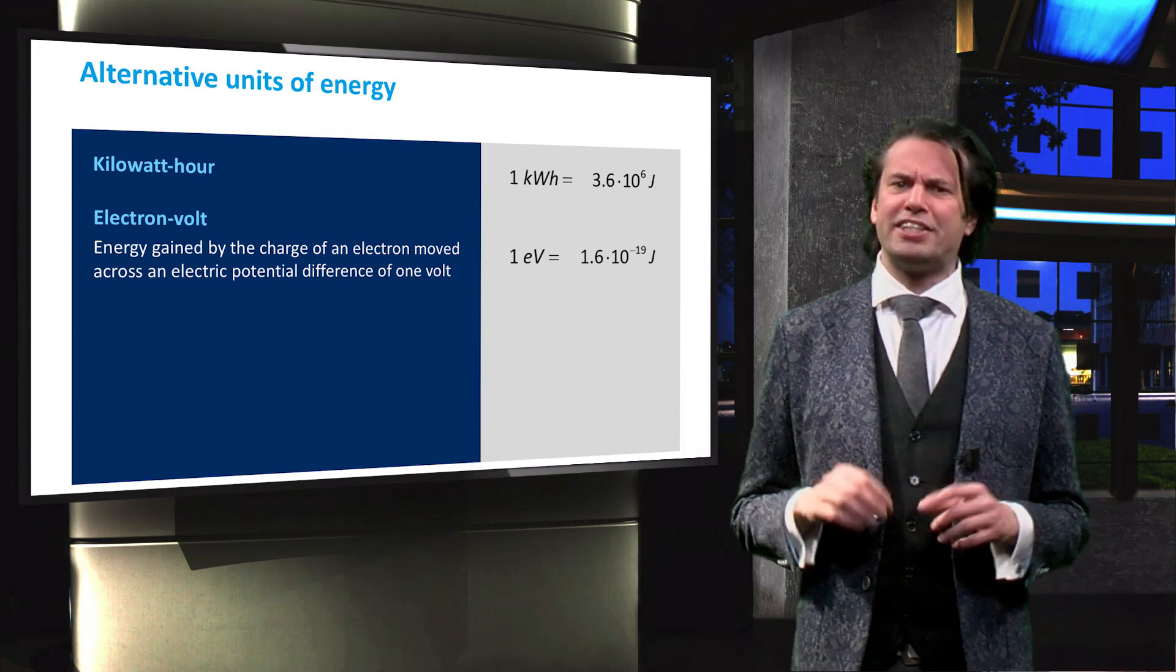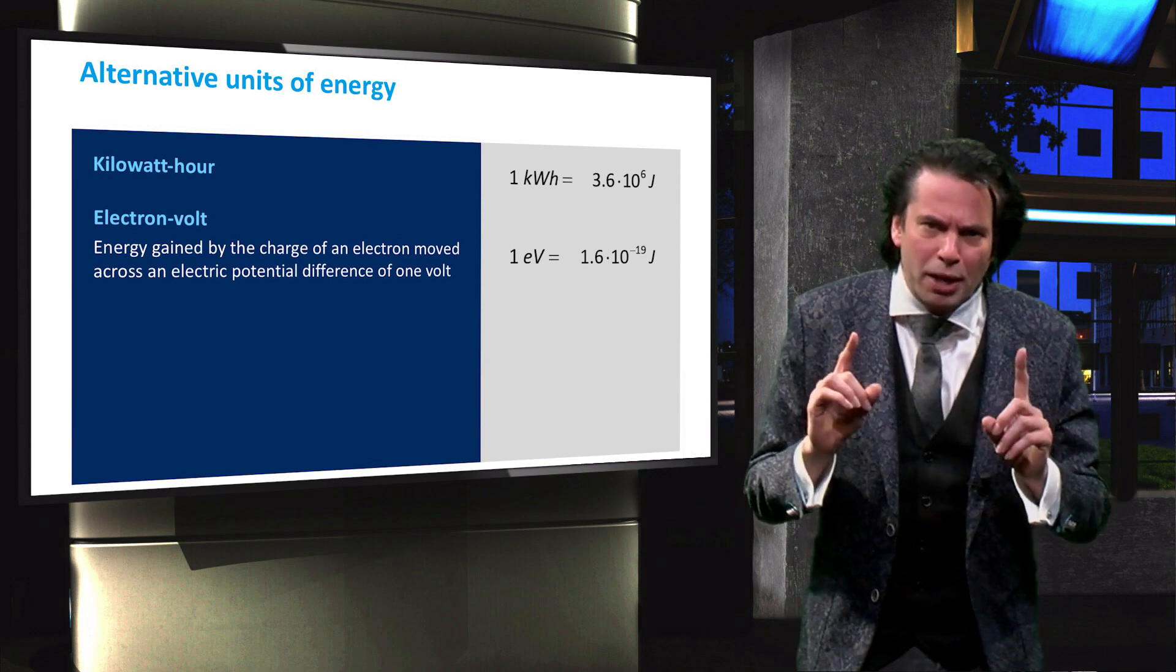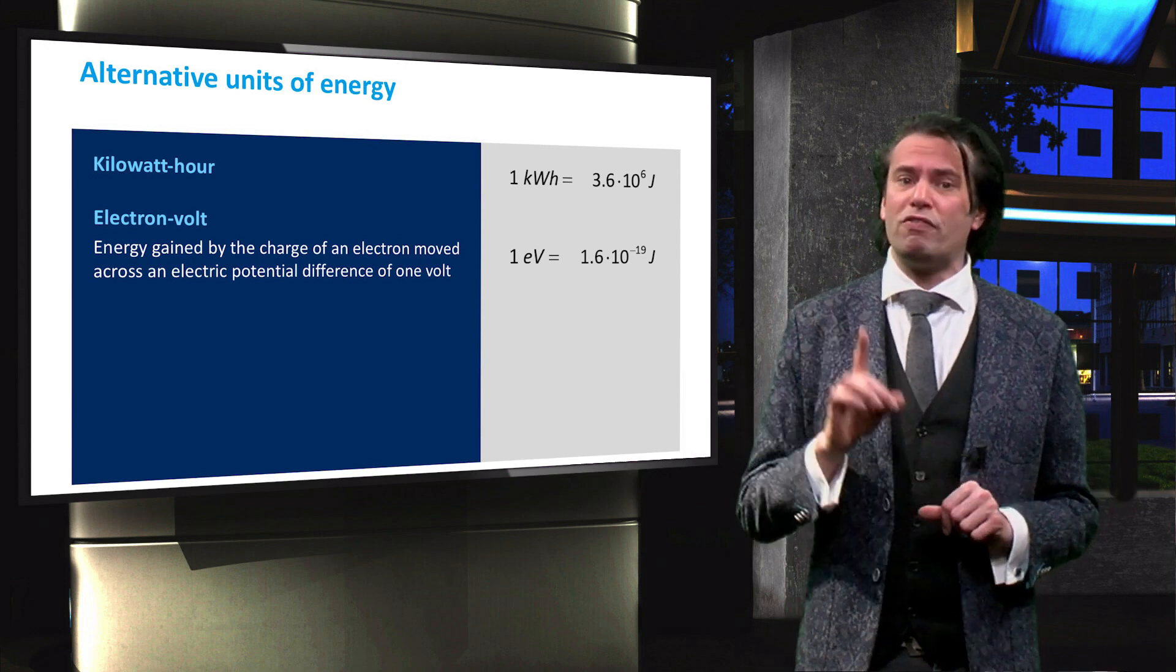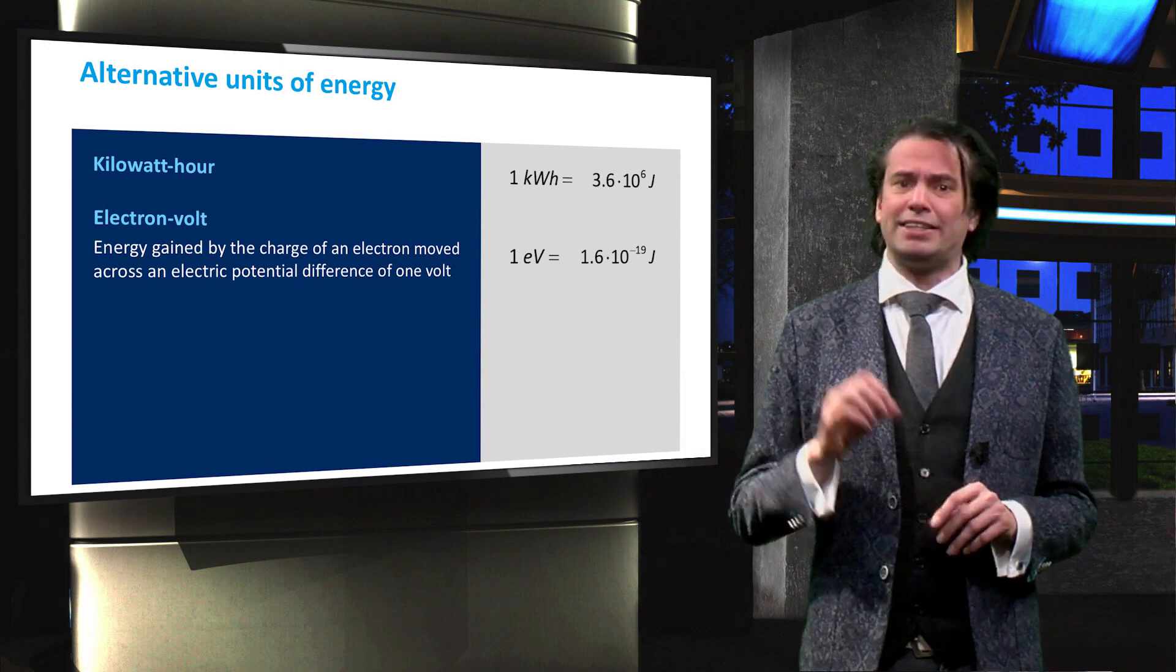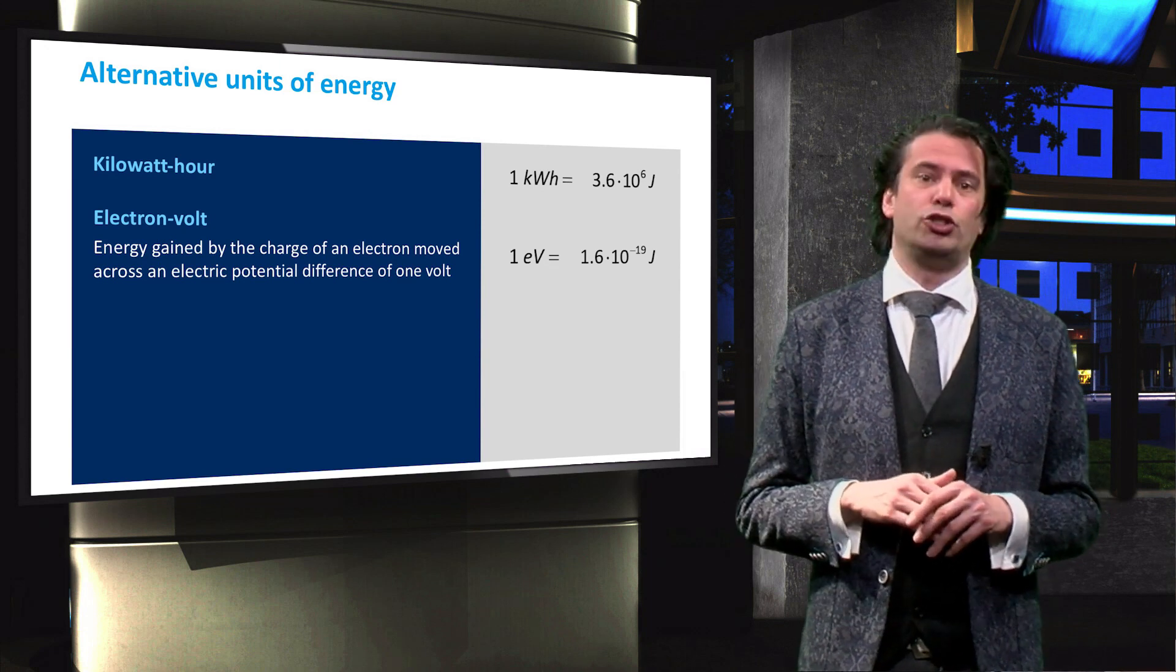One electron volt is therefore equal to the elementary charge times one volt, which equals 1.6 times 10 to the power minus 19 joules.